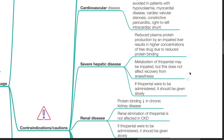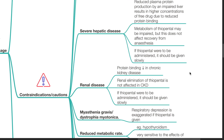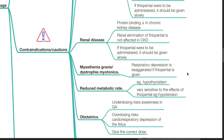Metabolism of thiopenthal may be impaired in hepatic disease, but this does not usually affect the recovery from anesthesia. If thiopenthal is to be administered, it should be given slowly. In patients with renal disease, protein binding decreases as well, and renal elimination of thiopenthal is usually not affected in CKD. If thiopenthal is to be administered, it should also be given slowly. In patients with myasthenia gravis and dystrophia myotonica, the respiratory depression is exaggerated if thiopenthal is given.